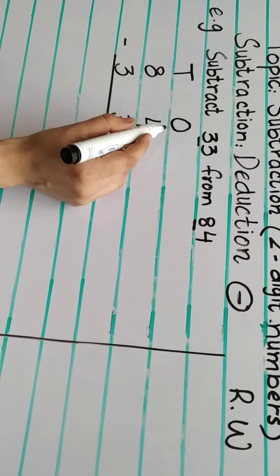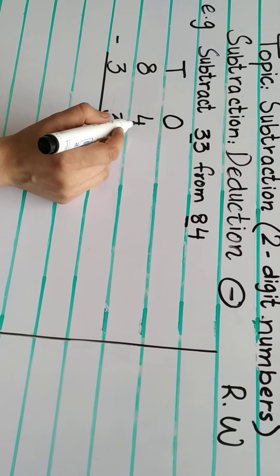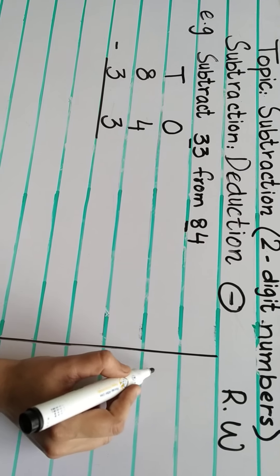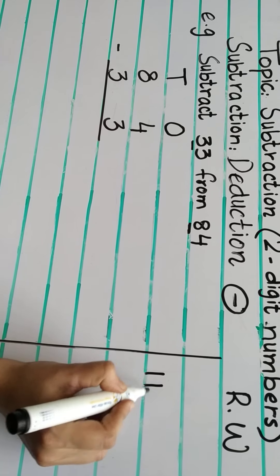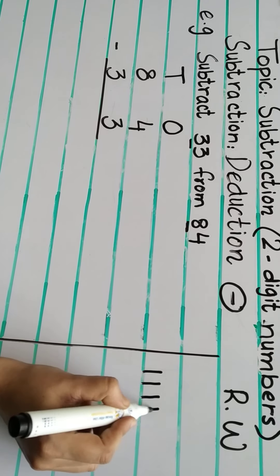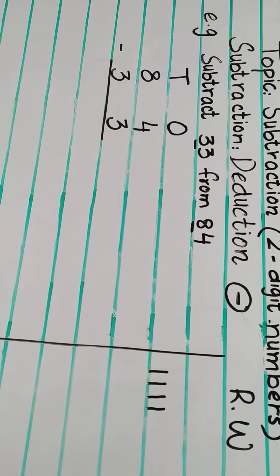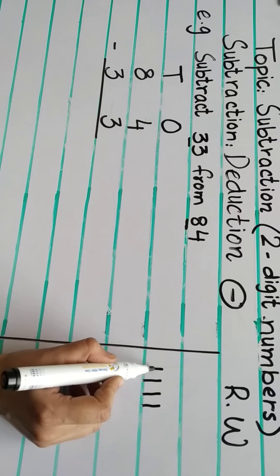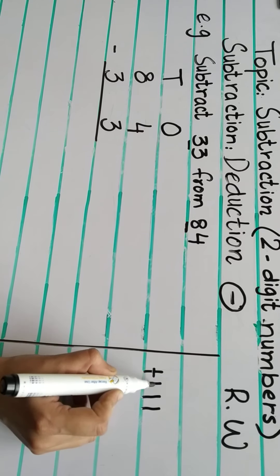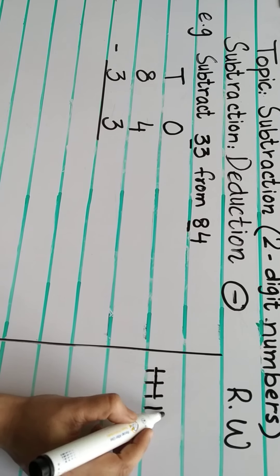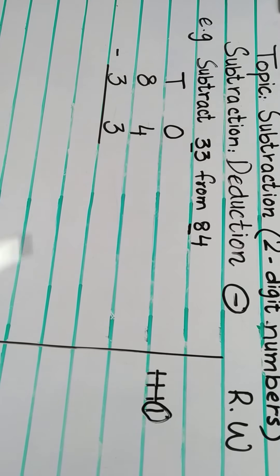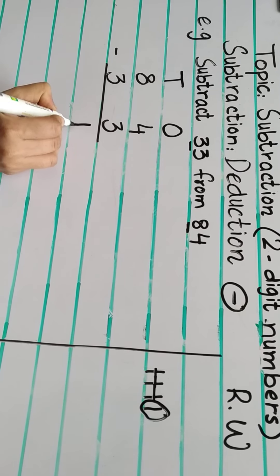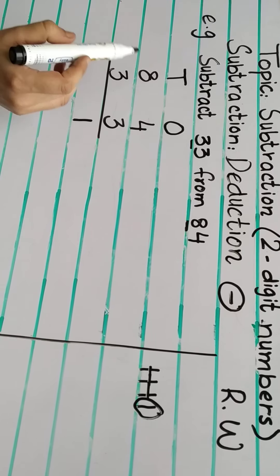Let's start from the ones column. The first number is 4. We will subtract 3. Draw 4 lines: 1, 2, 3, 4. How many will we subtract? 3. Cut 3 lines: 1, 2, 3. The one left is 1. So 4 minus 3 equals 1.